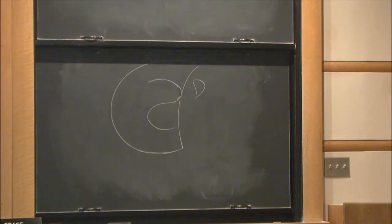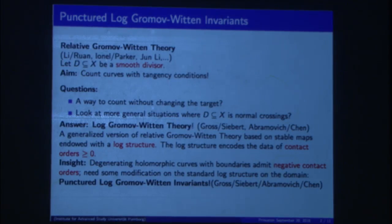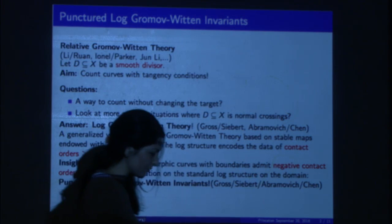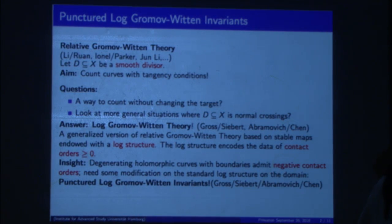I would like to propose this question in a way that you can treat it without modifying your target and also in a way that you are not considering only smooth divisors, but divisors that allow normal crossing singularities, like if you take the canonical divisor in CP2. And then what you want to do is log Gromov-Witten theory, a theory developed by Gross, Siebert, and Abramovich separately.